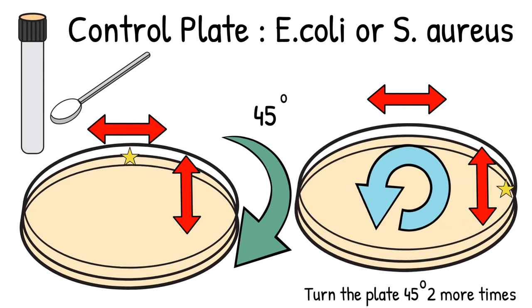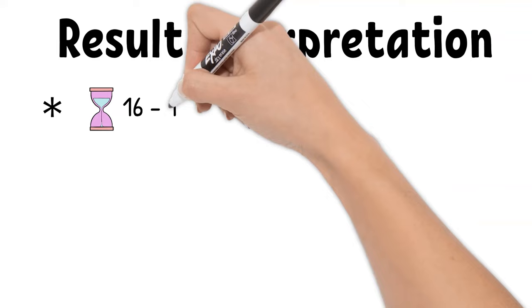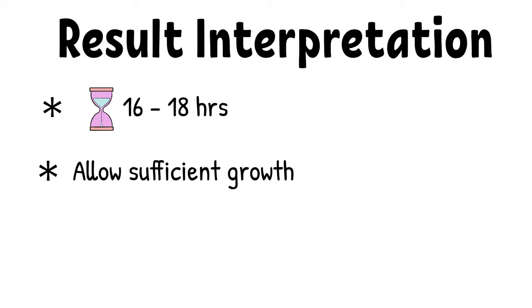E. coli and Staph aureus are usually used as control. After 16 to 18 hours, examine the plate to make sure that organism has grown sufficiently. We do that by looking at the control plate. The organism must show growth that covers the whole plate or almost covers the whole plate.